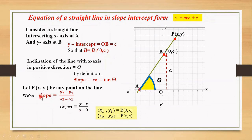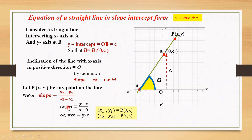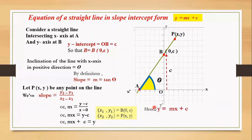Let's substitute the respective values in this formula. Slope is m, y2 is y and y1 is c, so the numerator is y minus c; x2 is x and x1 is 0, so the denominator is x minus 0, which is x. This x will go to the left-hand side to multiply with m, giving mx, and the right-hand side is y minus c. Now c goes to the left-hand side, so we have mx plus c on the left and y on the right. Hence we get y equals to mx plus c, which is the required equation of the straight line in slope-intercept form.